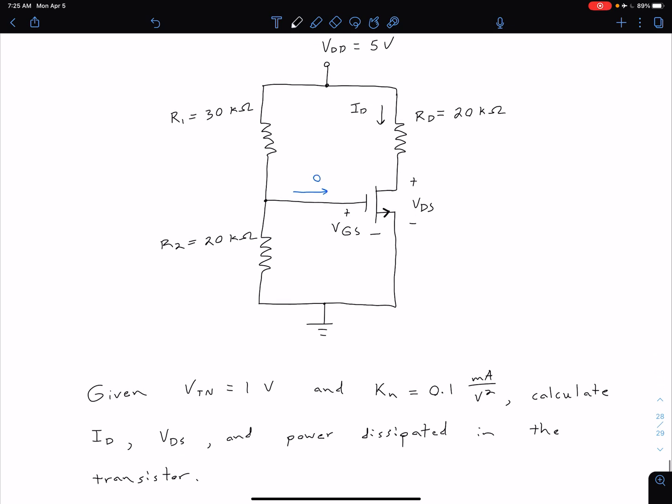So for this particular transistor, we're given that the threshold voltage is 1 volt. We have a conduction parameter of 0.1 milliamps per volt squared. And we want to find our drain current, we want to find the drain-to-source voltage, and we want to find the power dissipated in the transistor.